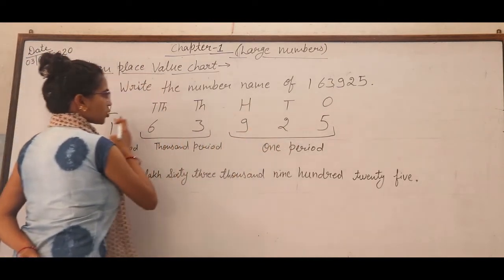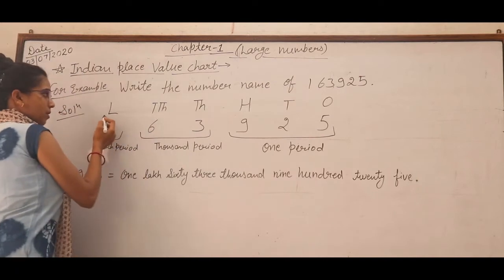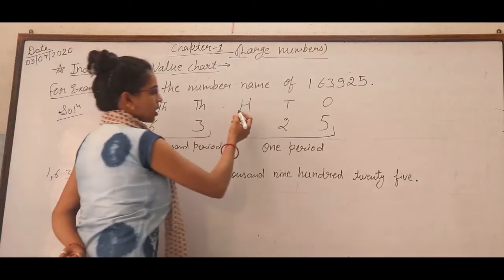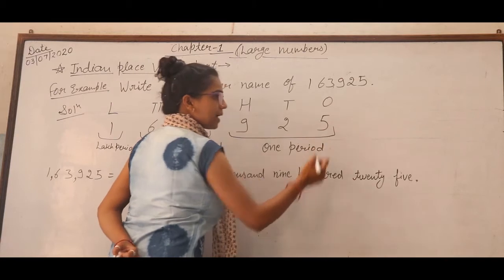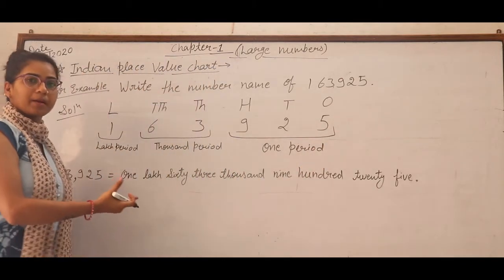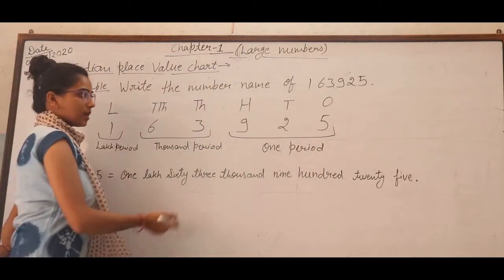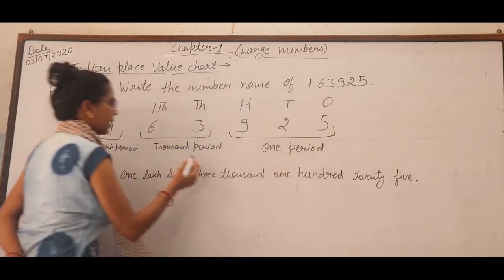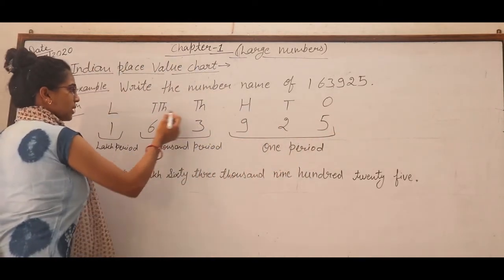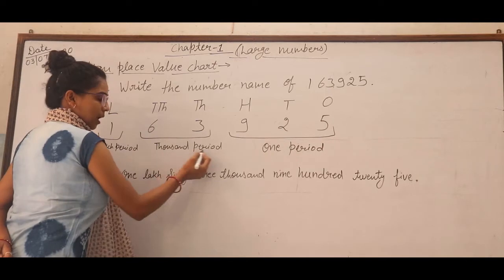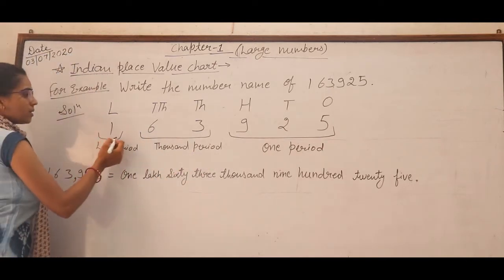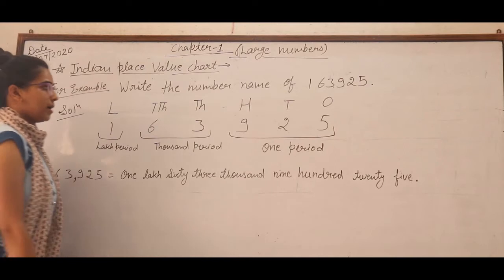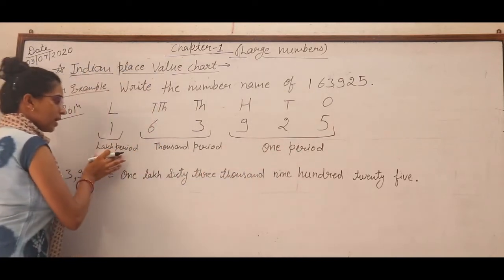सबसे पहले हमने given number को place value chart form में arrange कर लिया. Then उसके बाद में हम इसको periods में divide करेंगे. जैसे ones, tens और hundreds हमारा Once Period होता है. Thousand और Ten Thousand हमारा Thousand Period होता है. And Lakhs और Ten Lakhs हमारा Lags Period होता है. तो हमने इनको periods में divide कर लिया.